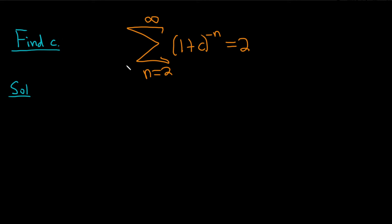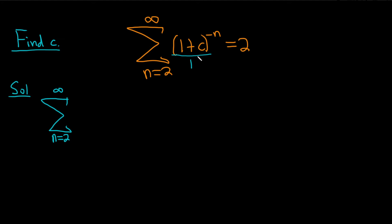This is a geometric series. Let's write it in a way that lets us really identify that. We're going to start by getting rid of this negative exponent — bringing it downstairs makes the exponent positive. So we have the infinite sum from 2 to infinity of 1 over (1 + c)^n, and that's equal to 2.